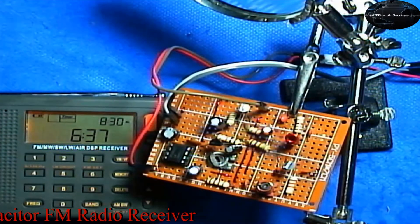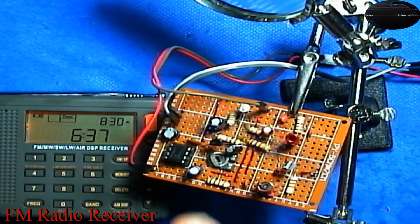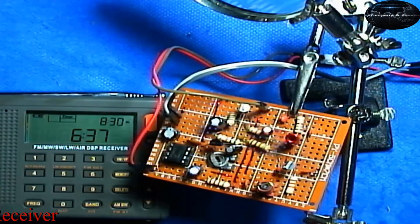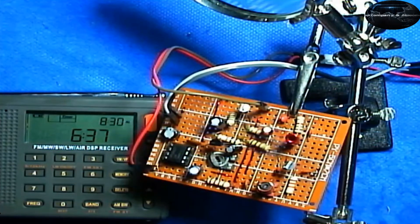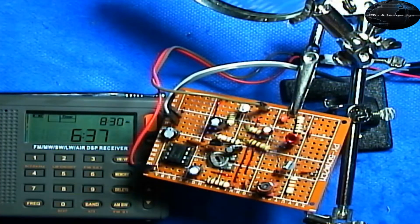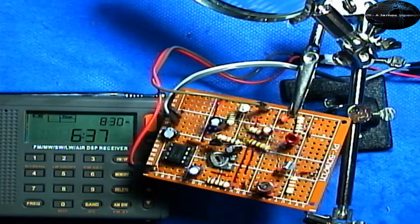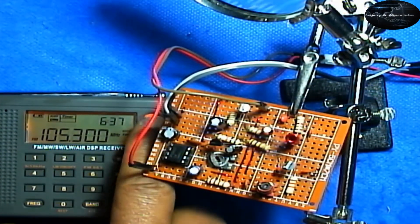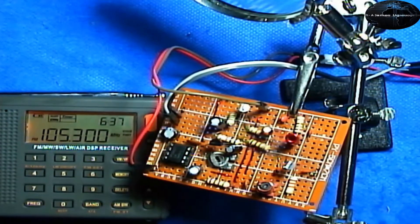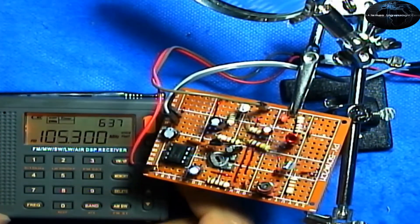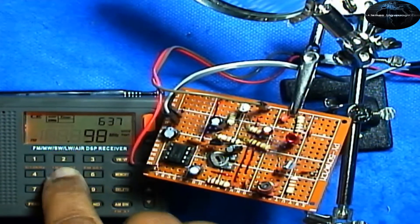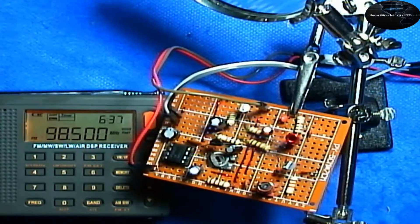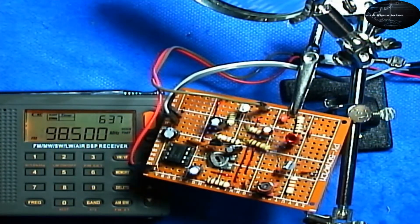So we've tuned this radio we built together to two frequencies right now, 105.3 and 98.5. We're going to prove that again. So this is our radio and that's the Sikkwa Don. We're going to go to 98.5 and check it again.